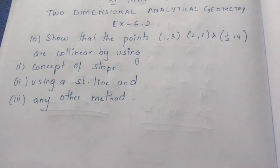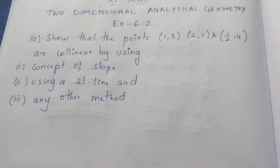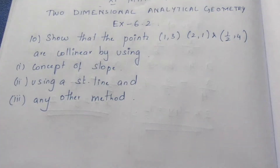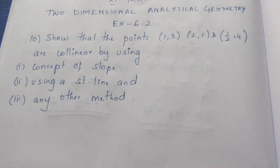To show that three points are collinear, we can use three different methods. The first one is the concept of slope — the slope method. The second one is using a straight line equation formula. We will go through these different methods.